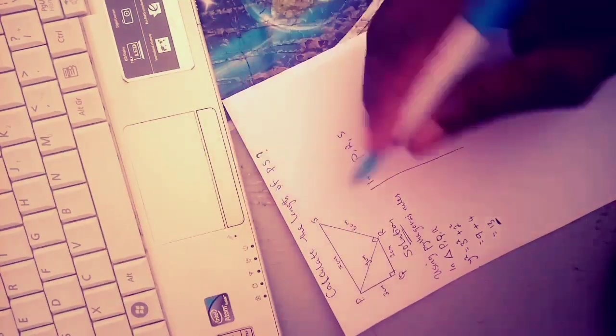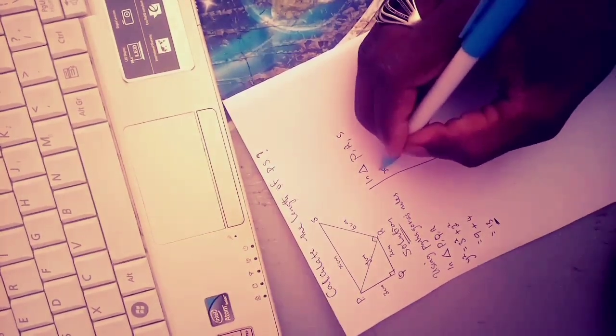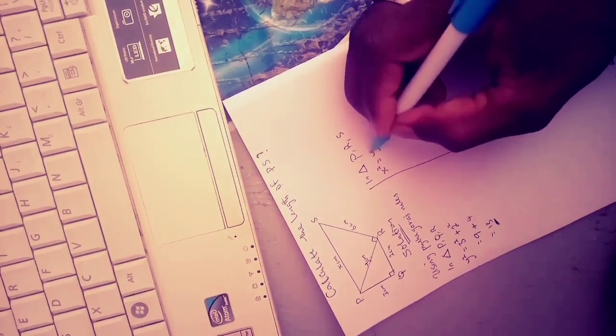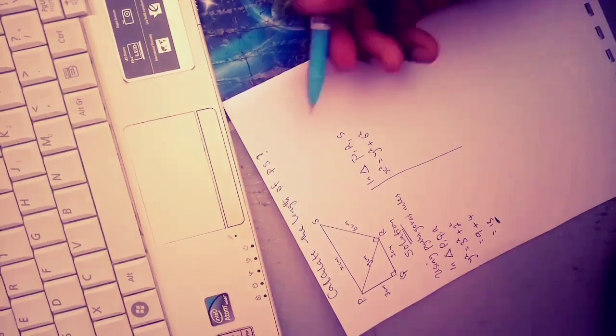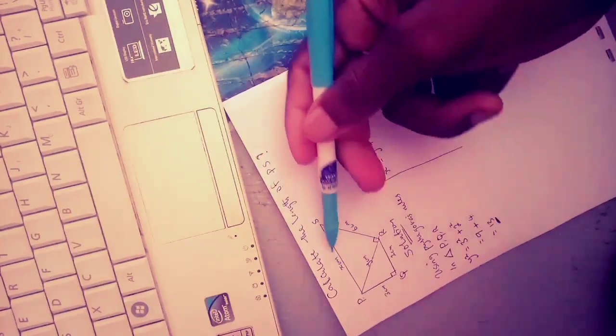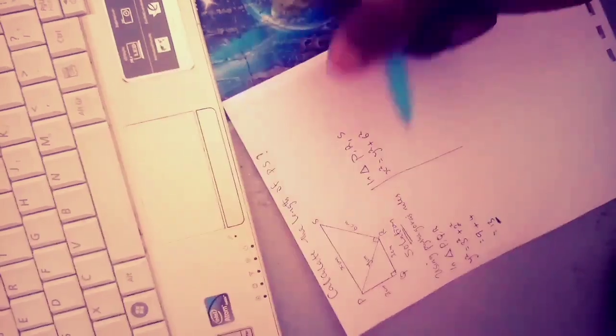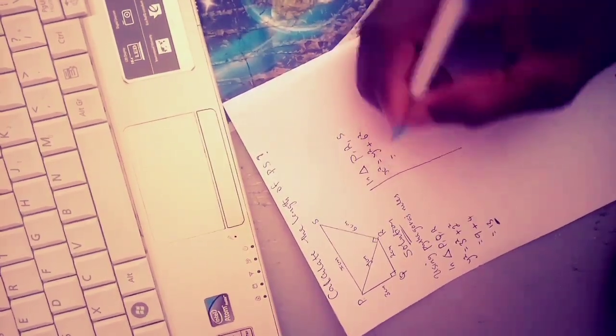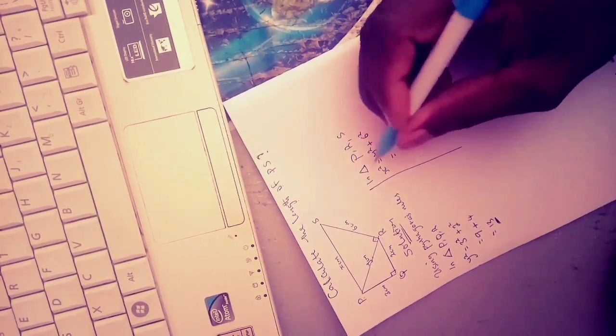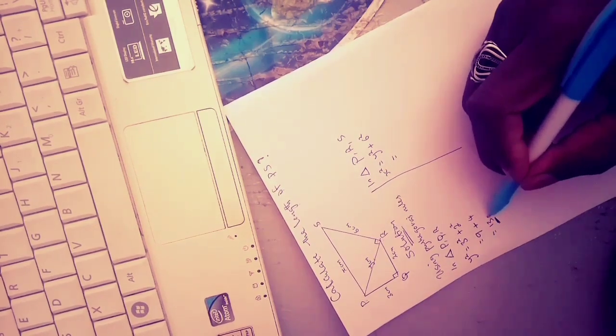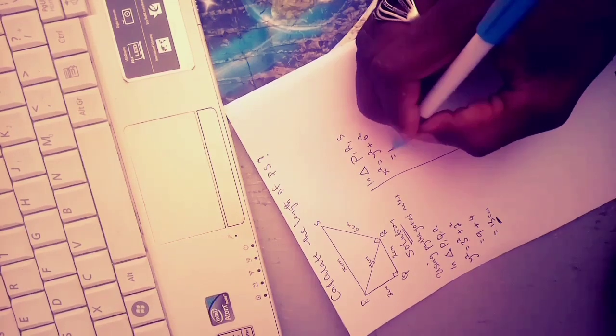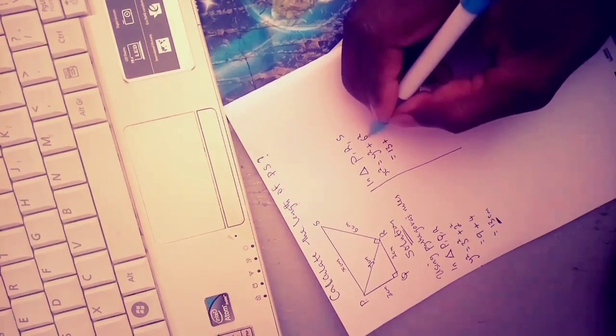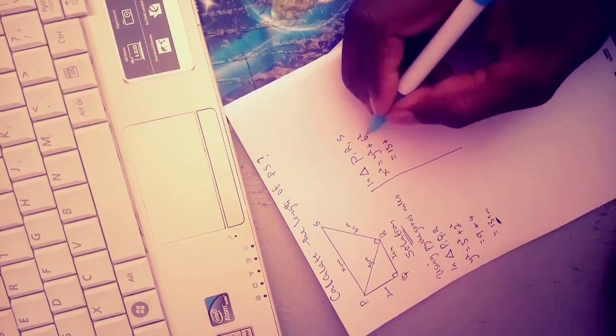x squared equals to y squared plus 6 squared. So what is our y squared? Our y squared is 13. We got our y squared earlier, so we are going to use it here: 13 plus 6 squared, which is 6 times 6, which is 36. So 13 plus 36 equals 49.